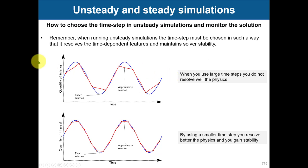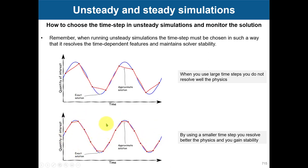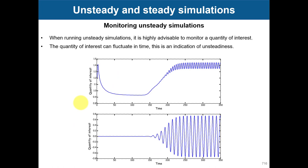Basically, if you're not resolving the unsteadiness — for instance, if you choose a time step that jumps from one point to another — you are missing completely that instability, those oscillations. Usually, when you get a CFL of one, you are sure that you are capturing those small fluctuations or instabilities. A CFL of one means you are capturing the instability.